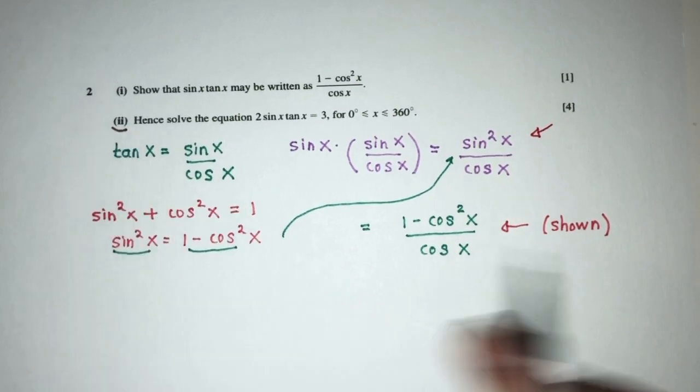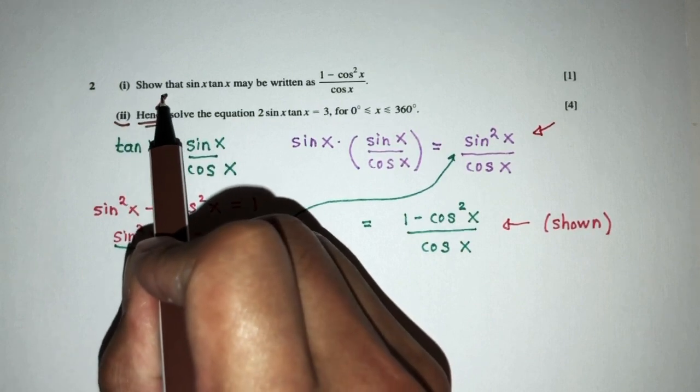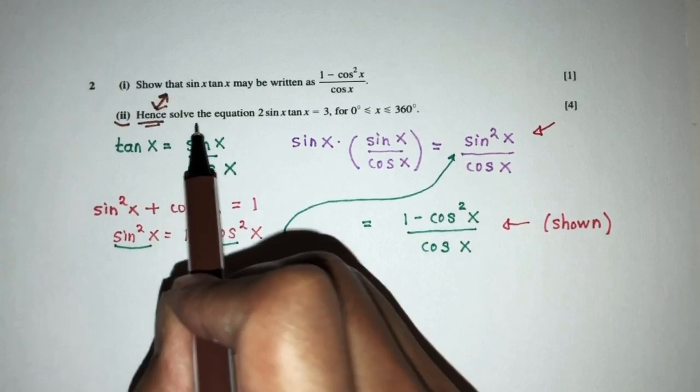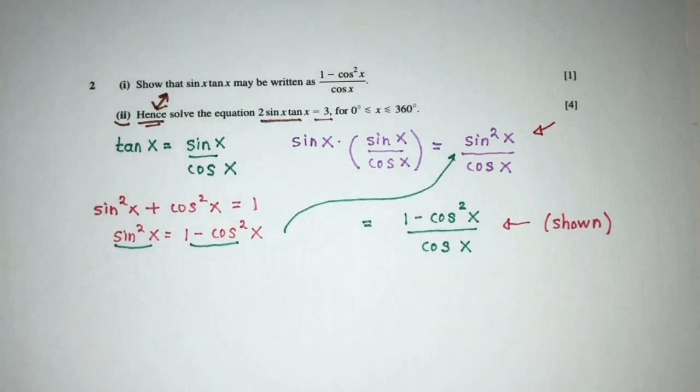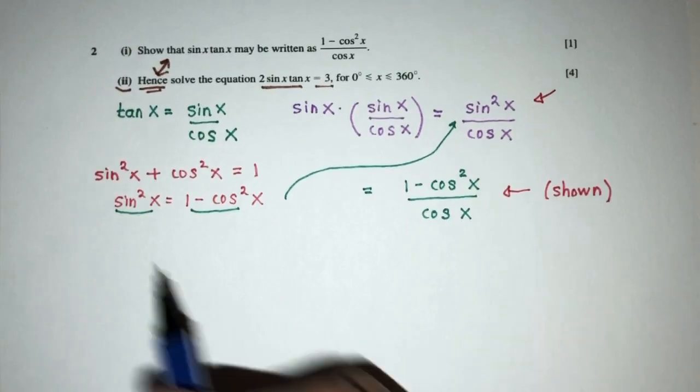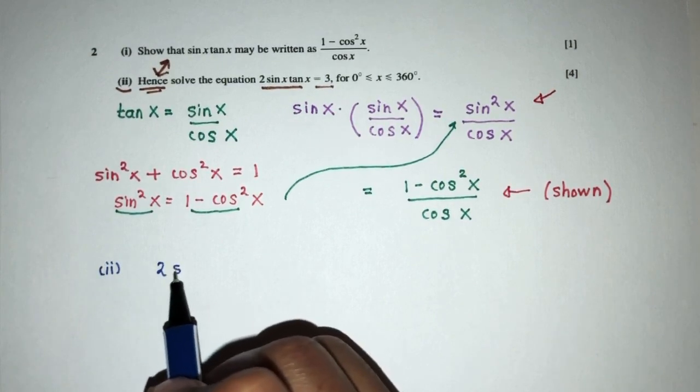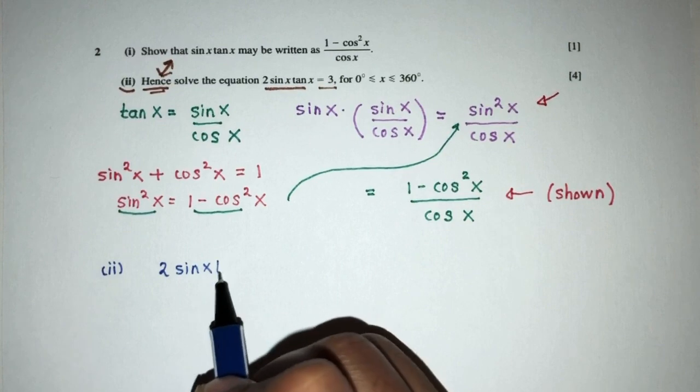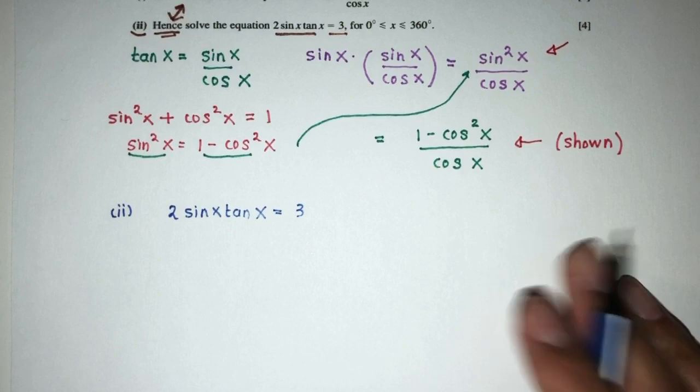Now for part 2, hence, so usually hence means using the answer from part 1, solve this equation. So solving this. So let's see. So from part 1, we have what? So part 2, as you can see, we have 2 sine x tan x is equal to 3 over 2. Now, pretty easy.